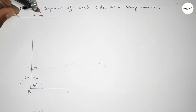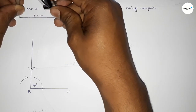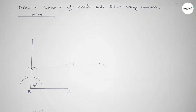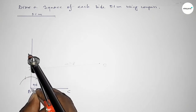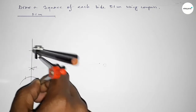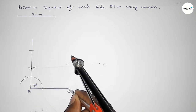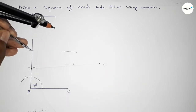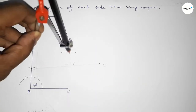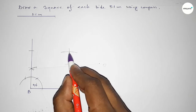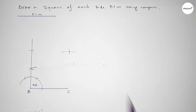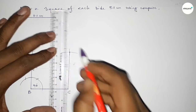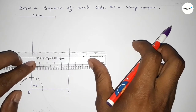Now taking the length 5.1 centimeters with the compass, putting the compass on point B and cutting an arc. Then putting the compass on point C and drawing an arc with the same length, cutting here — both curves intersect at a point.